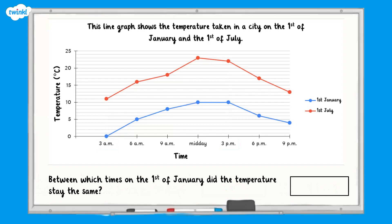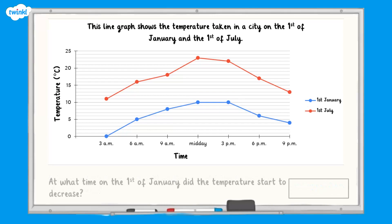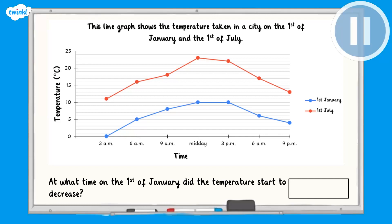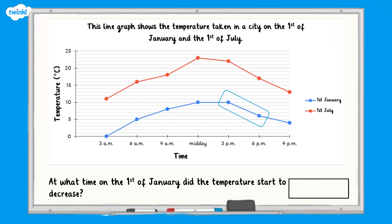Sometimes we can answer questions about a graph just by looking at the shape the graph is creating. For example, between which times on the 1st of January did the temperature stay the same? We can look at the shape of the line to answer this question. The line does not go up or down between midday and 3pm, so this shows us that the temperature stayed the same. At what time on the 1st of January did the temperature start to decrease? Pause here and see if you can answer this question. We can look at the line and see that it starts to go down at 3pm, so our answer is 3pm.